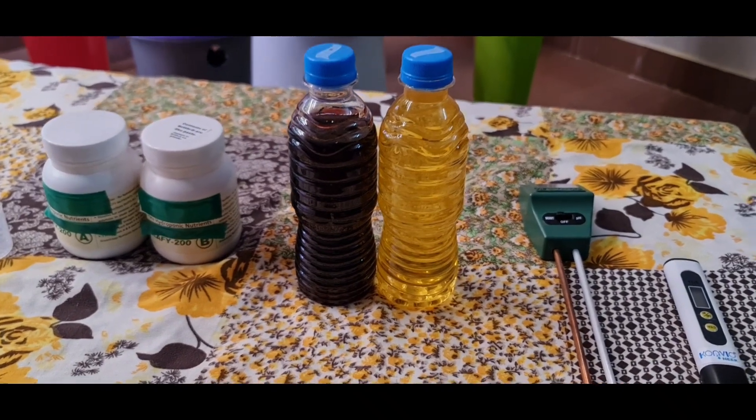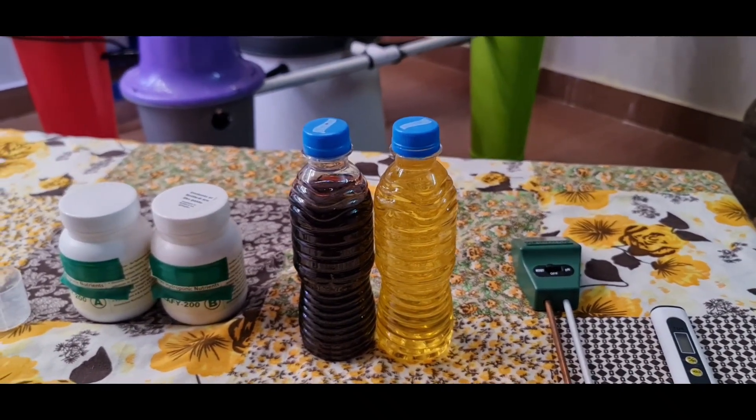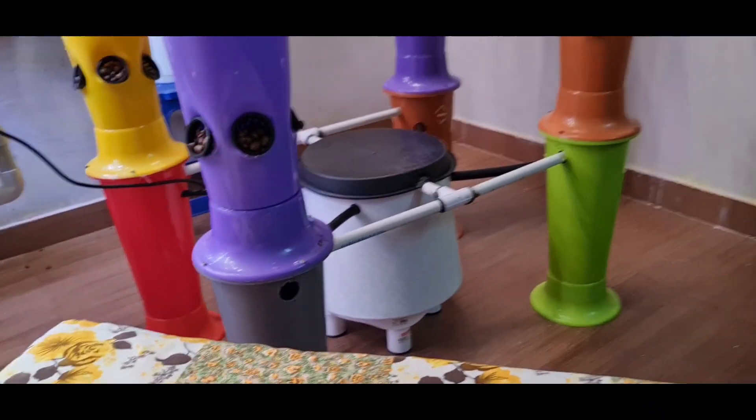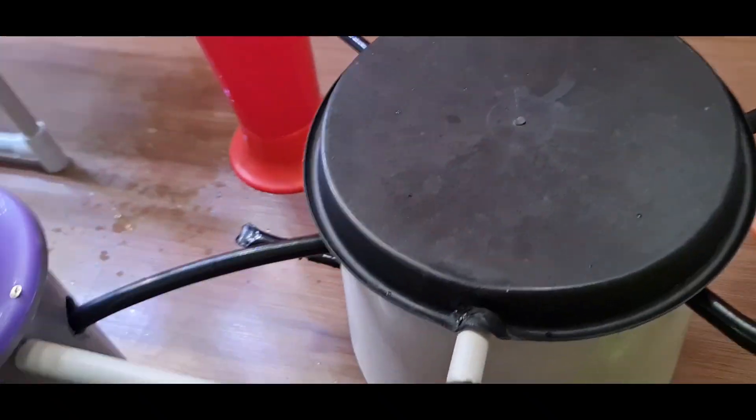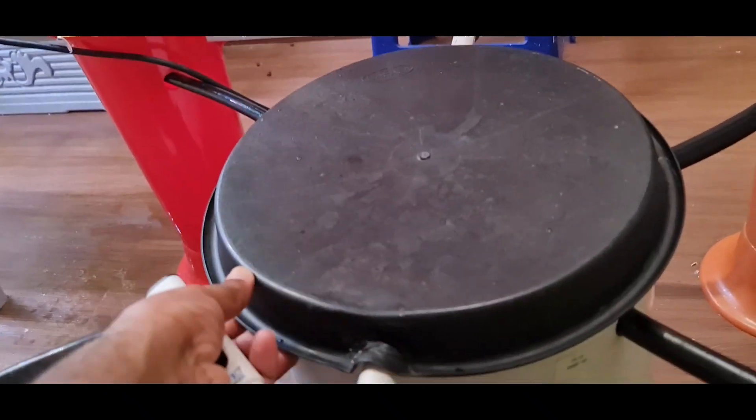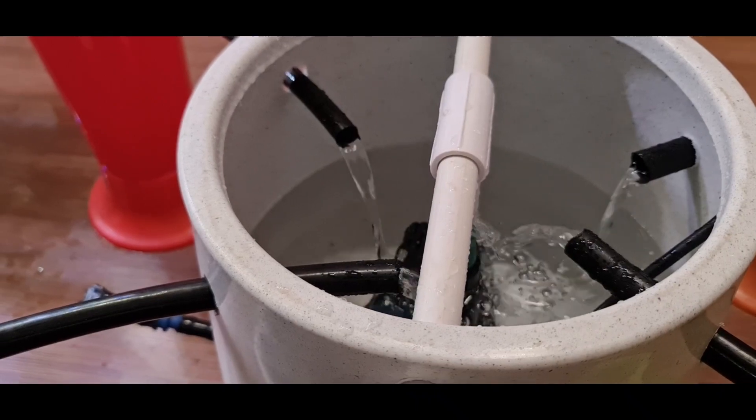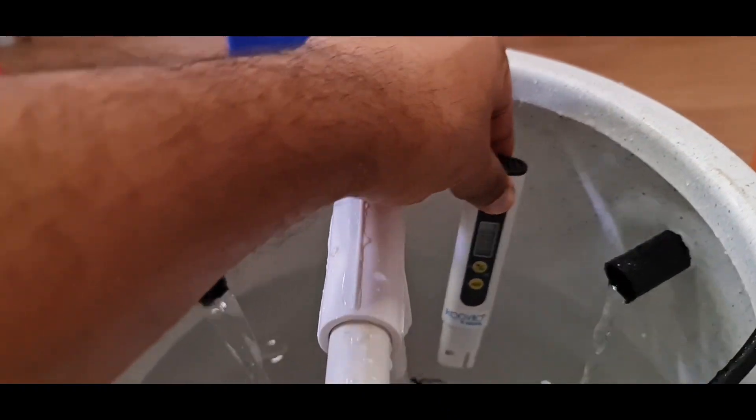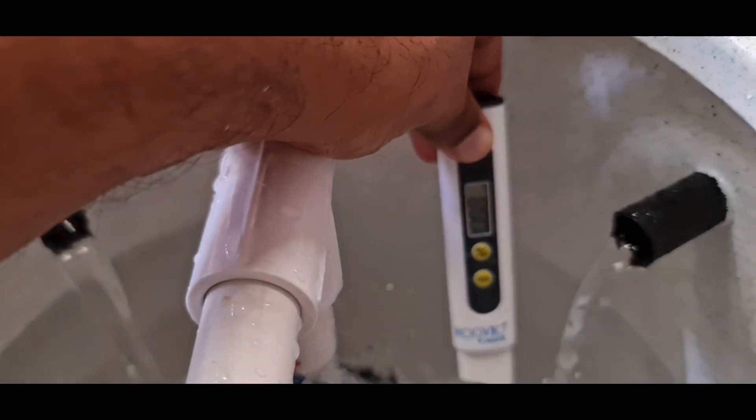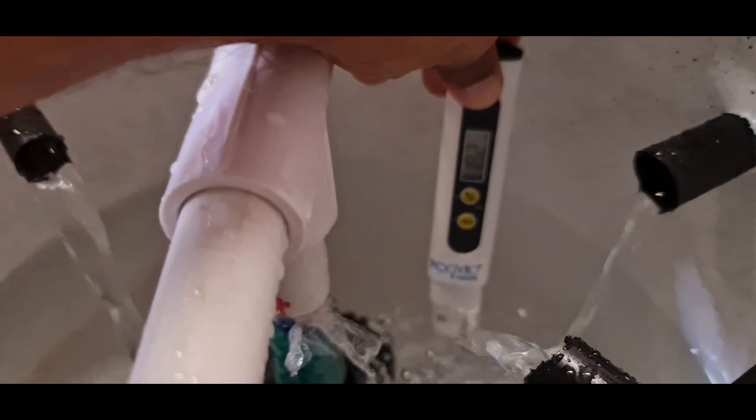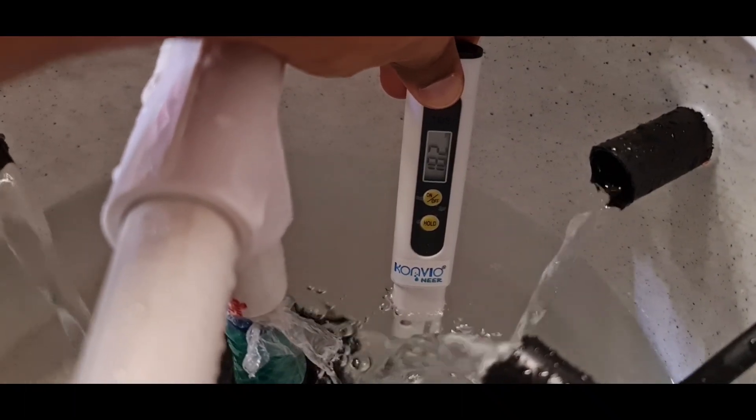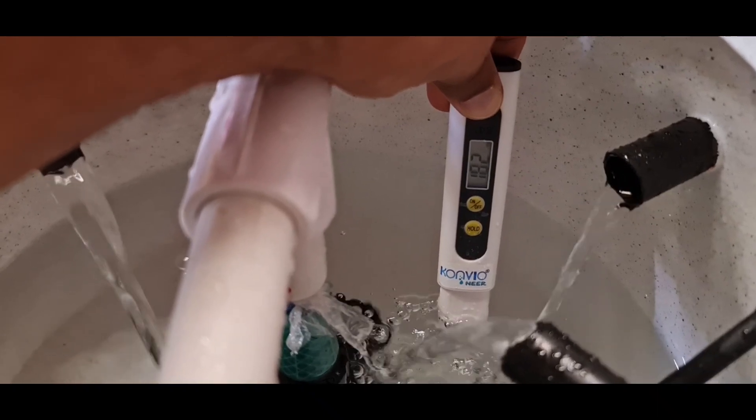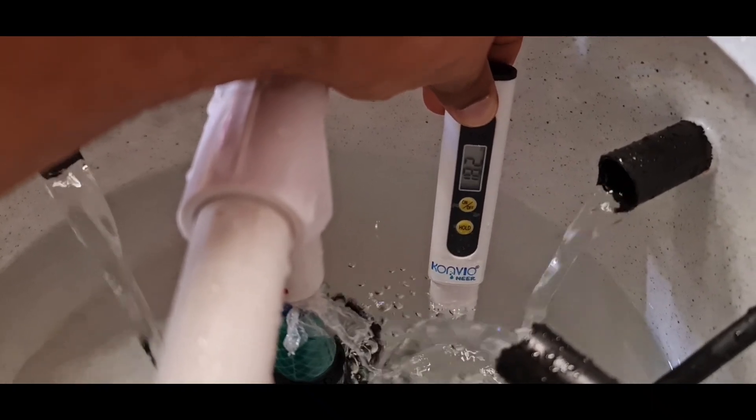Now, before adding your solution to your hydroponic system, you should measure the amount of water in your hydroponic system. And also, you should measure the TDS of the water. I have 15 liters of water. Let me check what is the TDS of the solution. The TDS of this solution is showing 182. You can use water with a TDS of up to 200 to make your hydroponic solution.